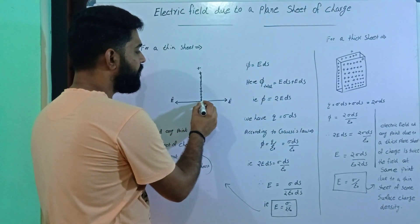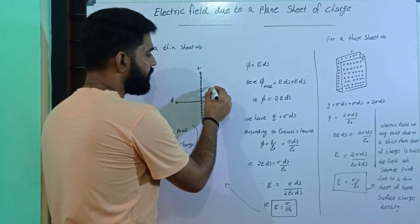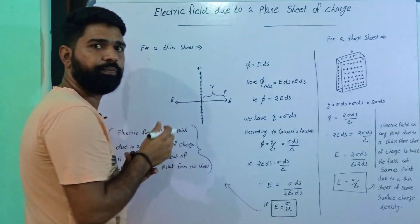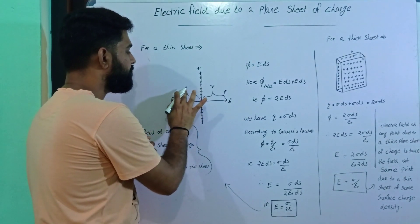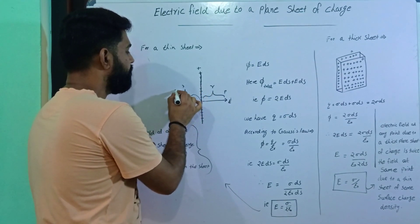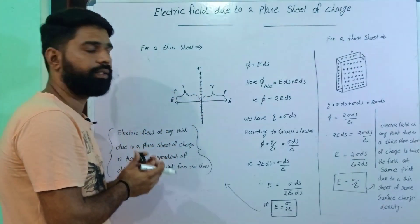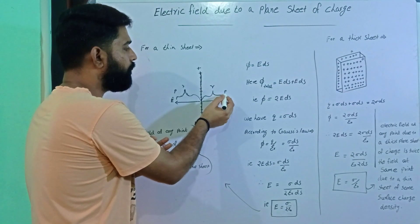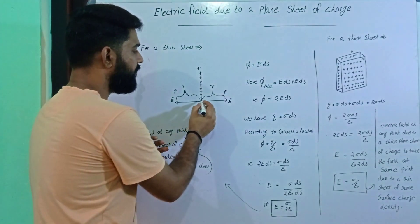Consider a point P. We have a distance R on the left-hand side and R on the right-hand side — equal distance from the sheet on both sides. P is the point on the left-hand side, and we have equal distances between P and the sheet on both sides.